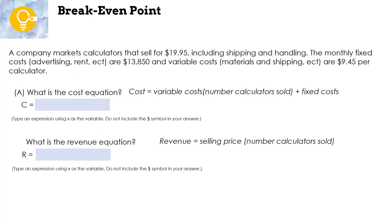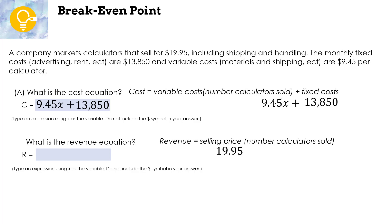A company markets calculators that sell for $19.95, including shipping and handling. The monthly fixed costs — advertising, rent, etc. — are $13,850, and variable costs, which are materials and shipping, are $9.45 per calculator. The cost equation is: C = 9.45x + 13,850, where variable cost $9.45 times number of calculators plus fixed cost $13,850. The revenue equation is: R = 19.95x, since we're selling them for $19.95 times the number sold.